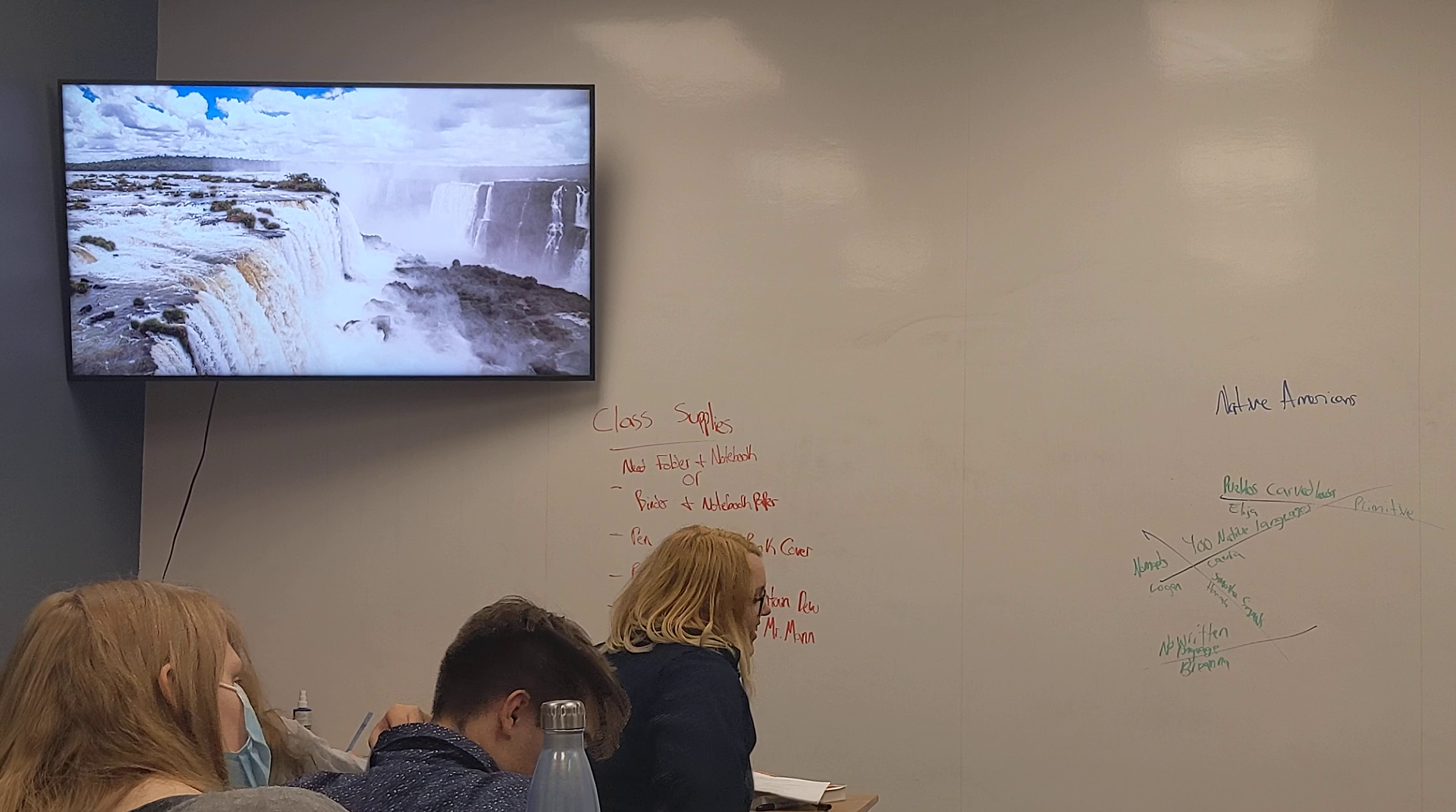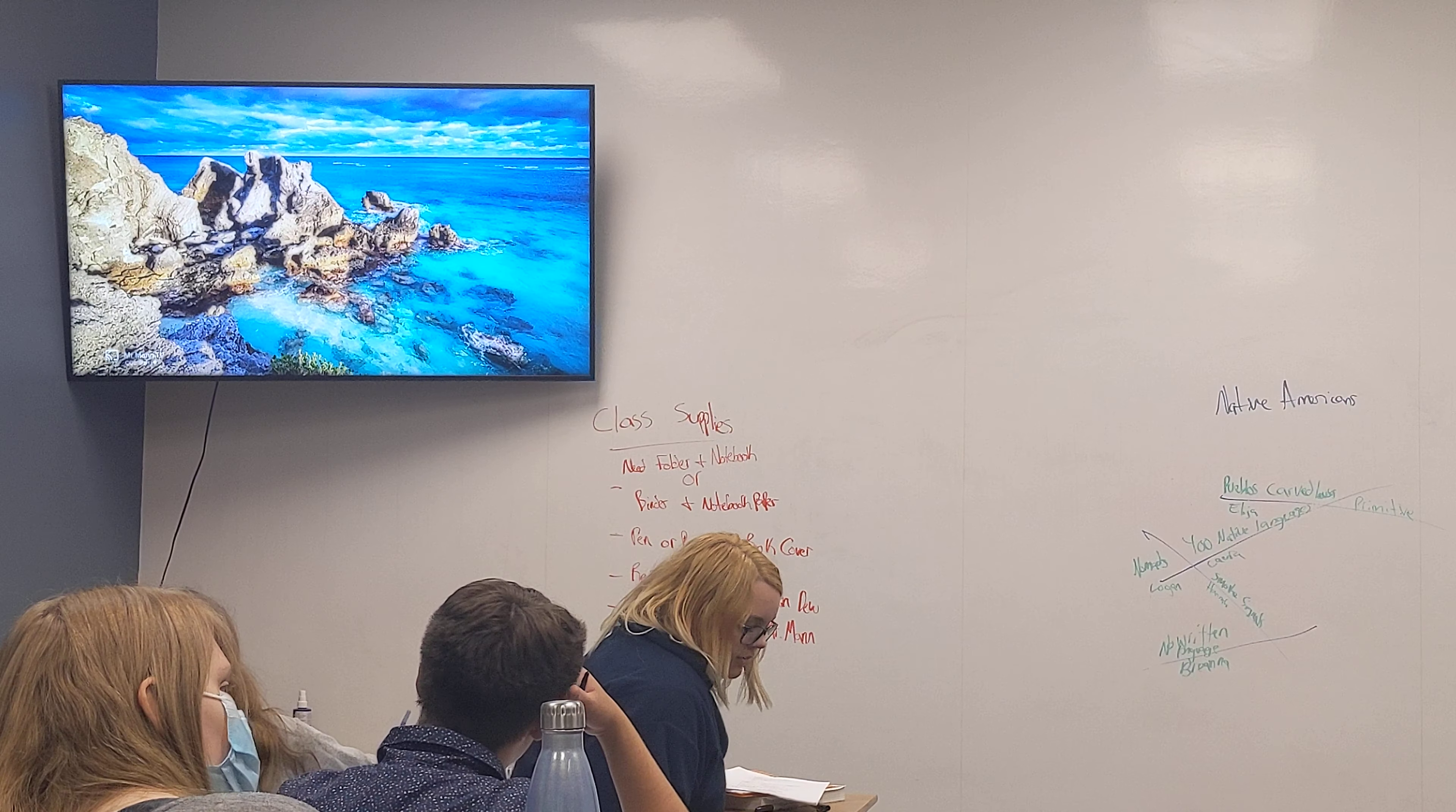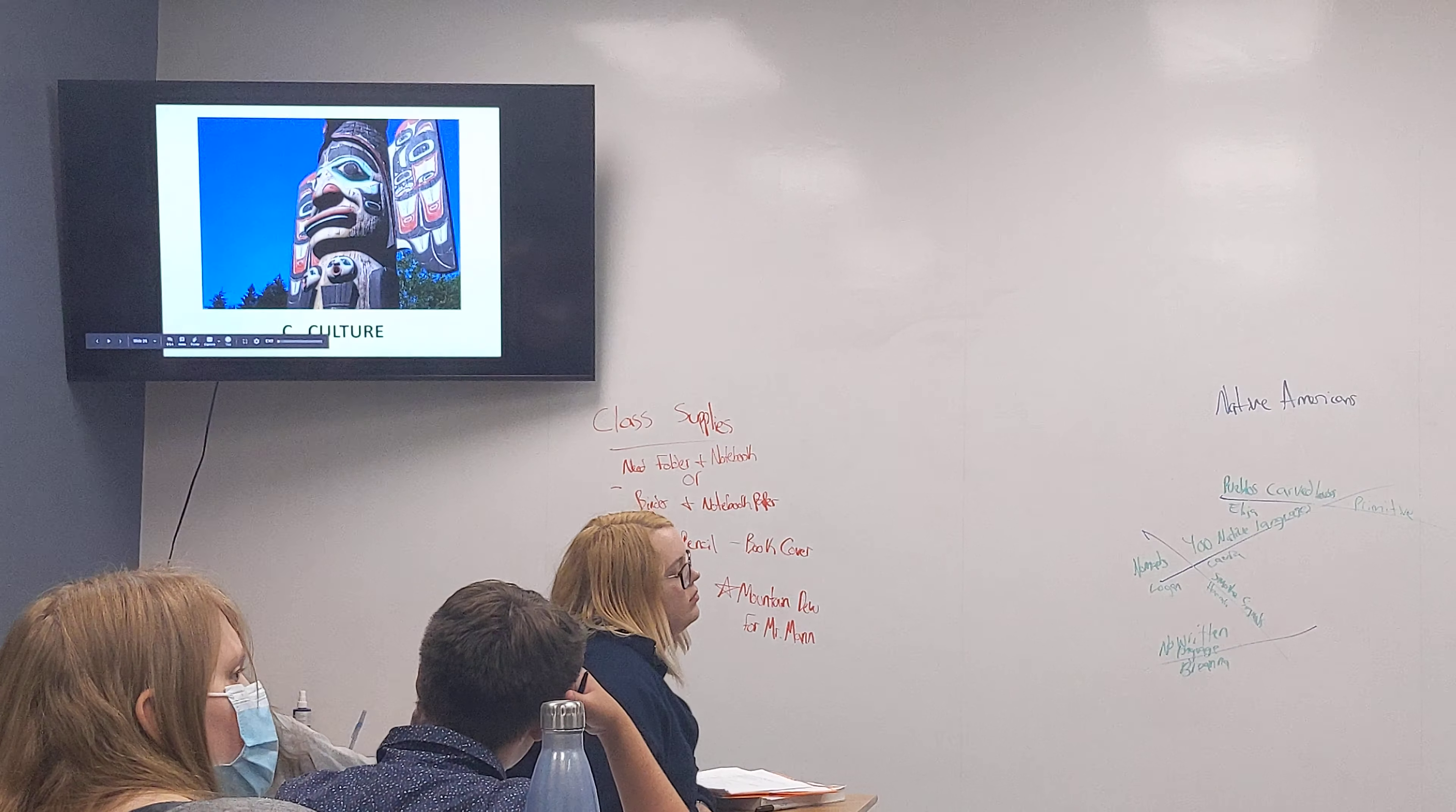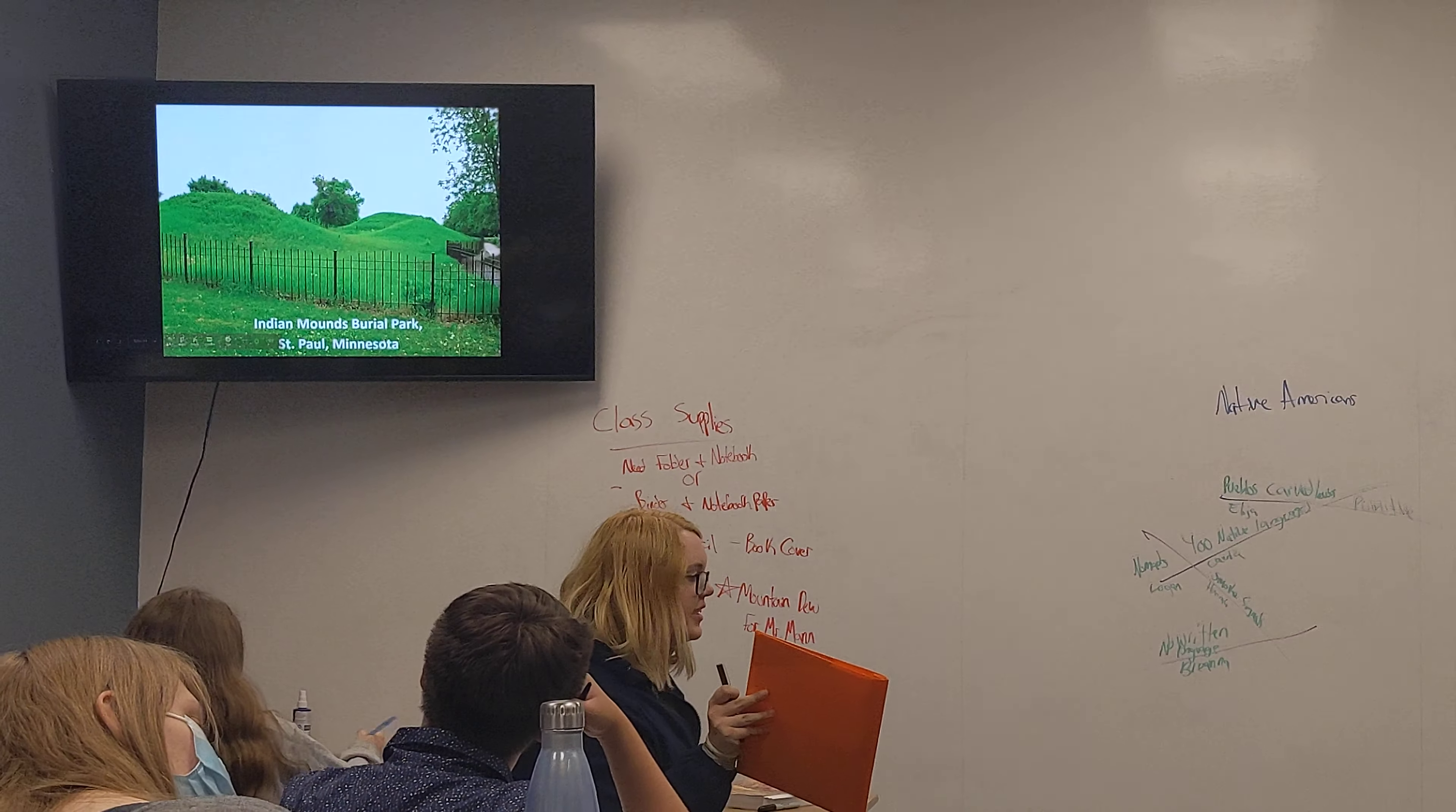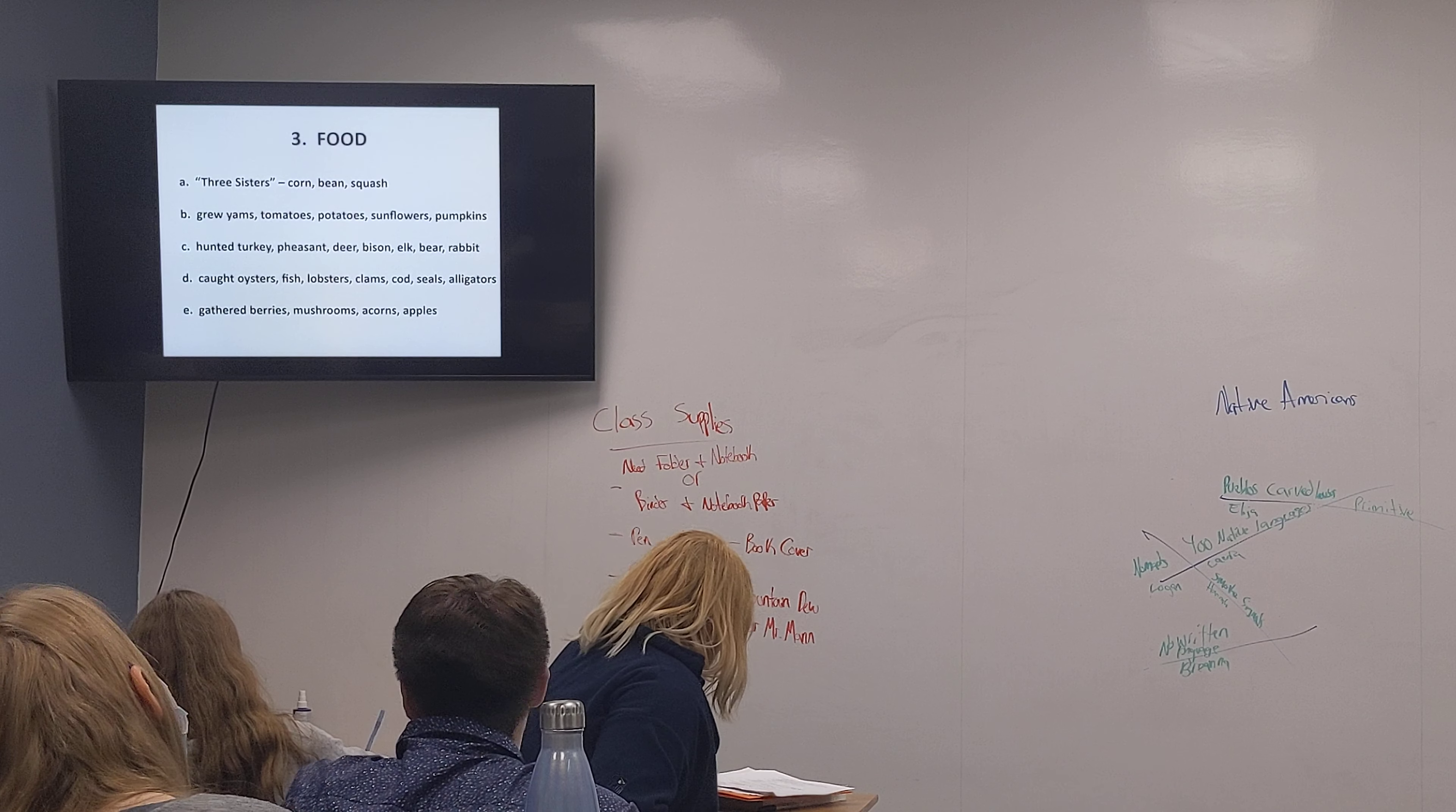Food. Three Sisters - consists of corn, beans, and squash. Other things they grew include yams, tomatoes, potatoes.